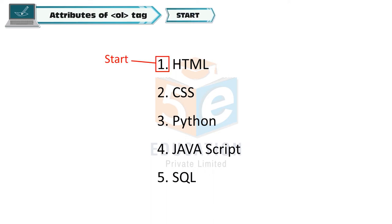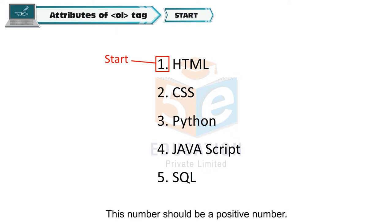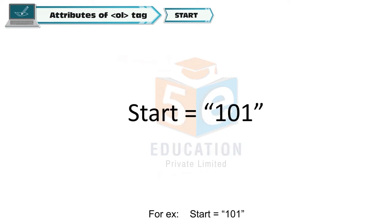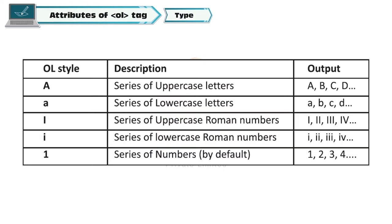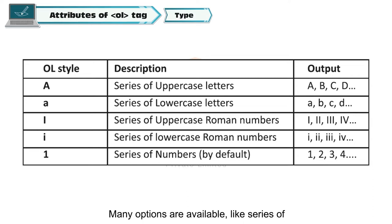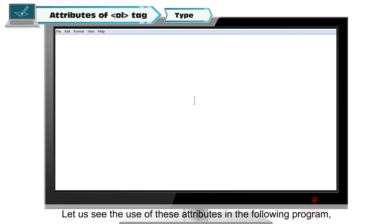Attributes of the ol tag. Start: This attribute is used to give the starting point of the numbering order of the list. This number should be a positive number, and its value must be given in double quotes — for example, start="101". This means the ordered list will start from number 101 and will move like 102, 103, etc. Type: This defines the type of numbering style for the ordered list items. Options available include uppercase letters, lowercase letters, uppercase Roman numerals, lowercase Roman numerals, and series of numbers, which is the default.